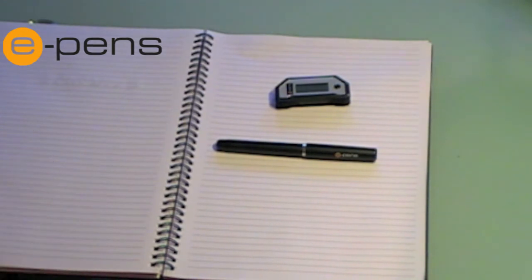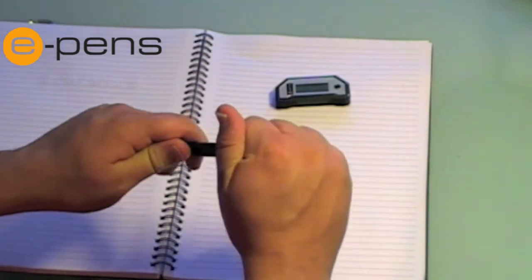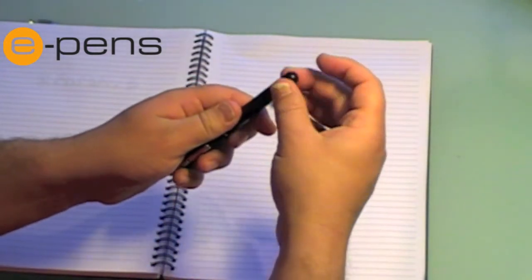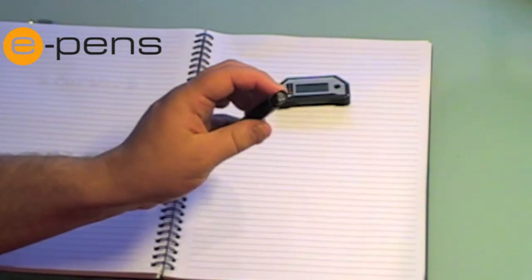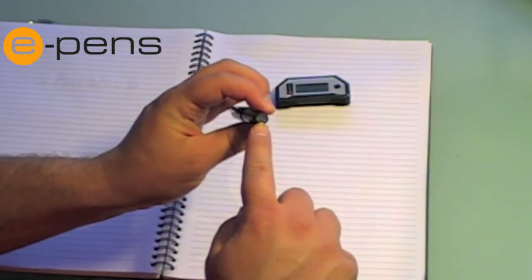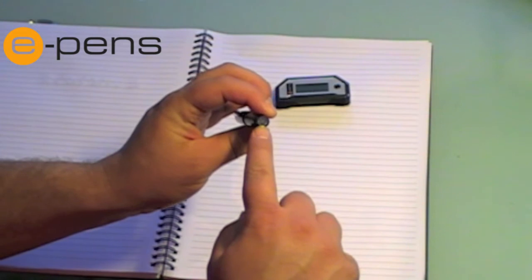Next you need to make sure that the ePen has batteries in it. To replace the batteries, just take the top off. There are two batteries which you need to make sure the plus sign is facing towards you.